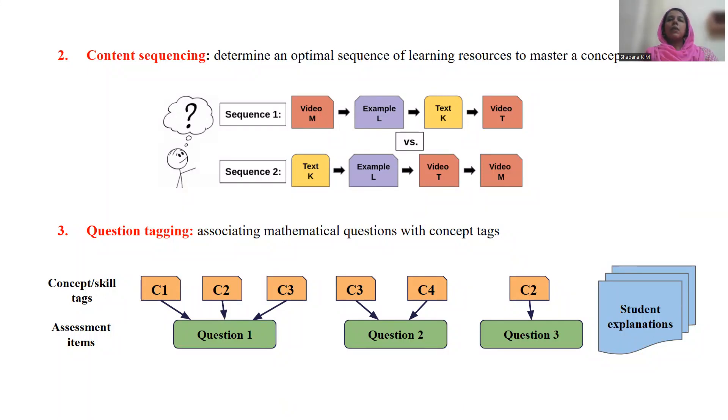We have formulated this problem as a Markov decision process and proposed a reinforcement learning algorithm that determines an optimal sequence of learning resources to individual students. Another interesting problem that we have studied is that of tagging mathematical questions with labels of concepts that are required to solve them. Concept tagging is useful in determining the student's knowledge levels associated with various concepts based on the correctness of student response to a question.